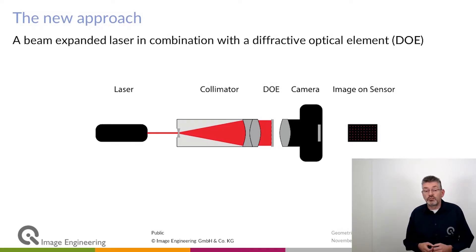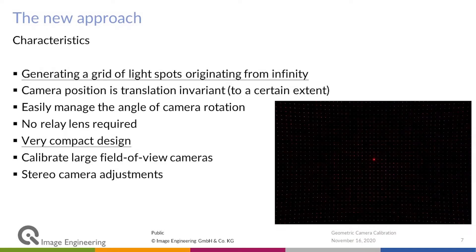The camera under test then captures an image of that diffractive optical element and produces an image of a grid of light dots. So that's what it basically does.